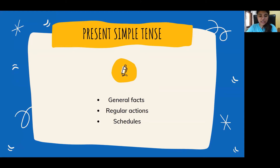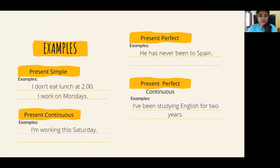For regular actions, these are things you do every day or every week, for example. And schedules means like a bus, airplane, or car schedule — something that maintains a regular schedule. Two more examples: 'I work on Mondays' is a simple present tense. A negative: 'I don't eat lunch at 2 o'clock.' These are simple present tense statements — just simple statements of fact.